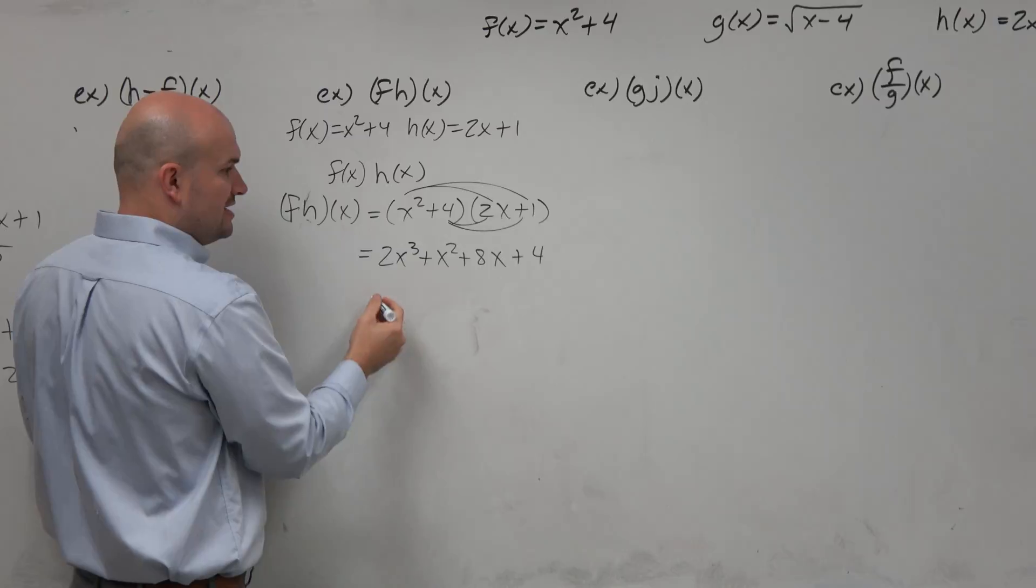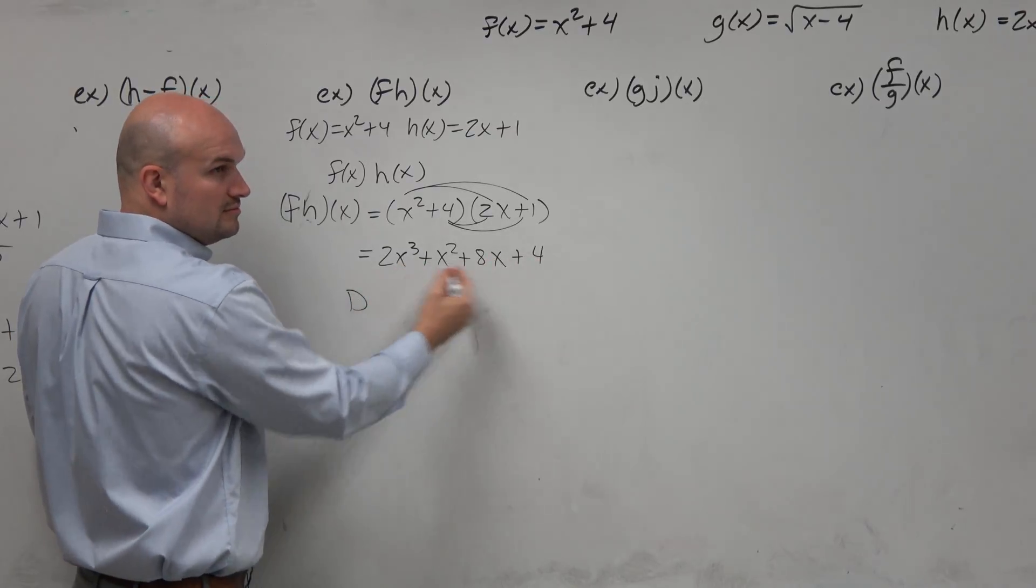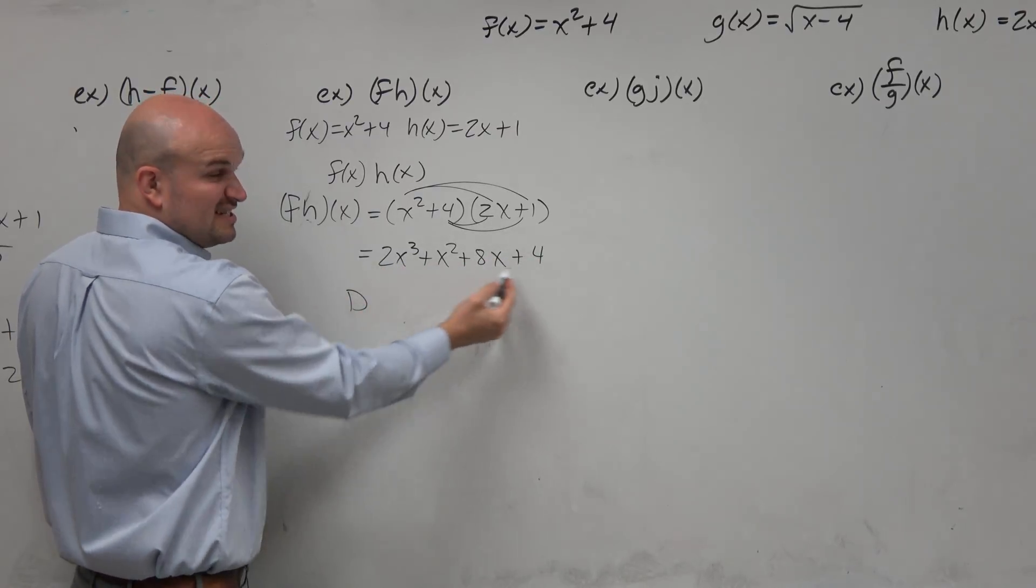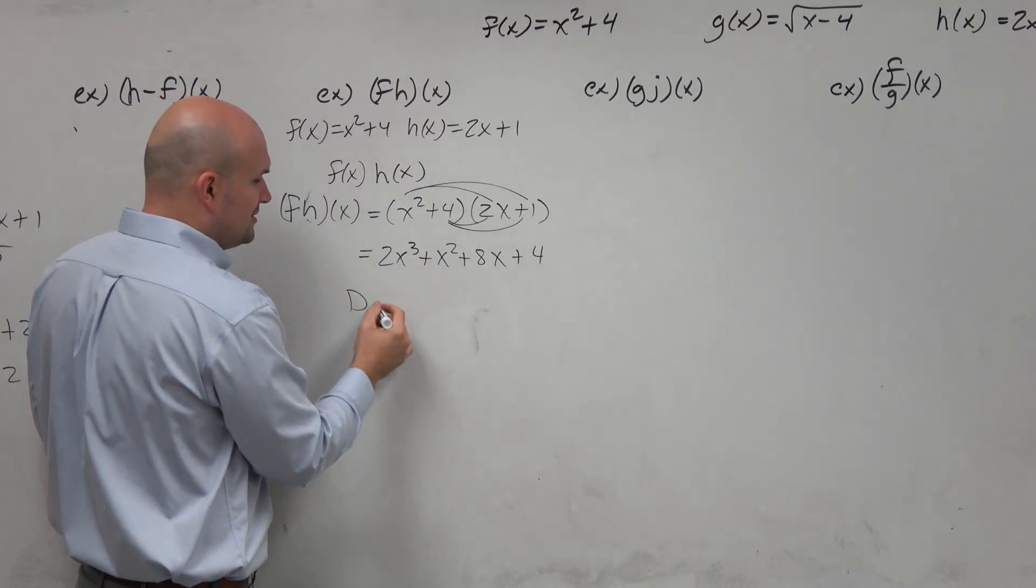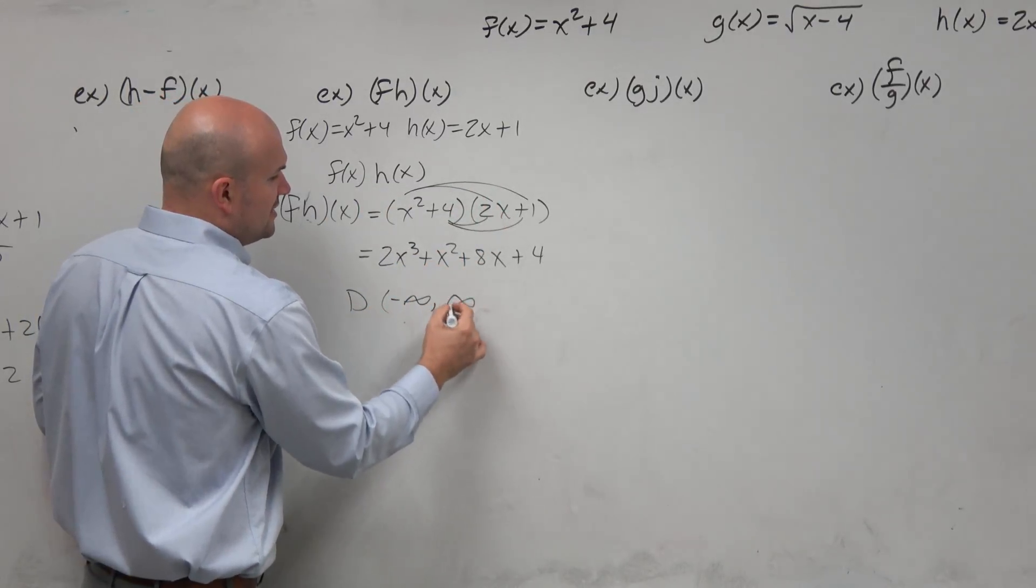Multiply them together, and guess what? The domain of this, this is a polynomial. It's a continuous function, right? It's cubed, right? So it's just another polynomial. So the domain is negative infinity to infinity.